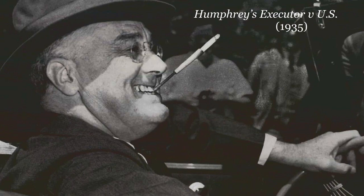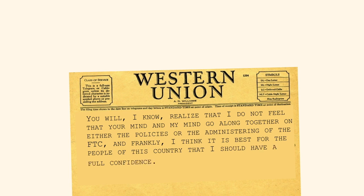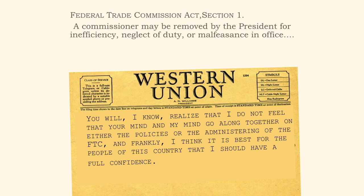Humphrey was one of the commissioners on the Federal Trade Commission, appointed by President Coolidge and reappointed by President Hoover. Once in office, President Franklin Roosevelt requested Humphrey's resignation — 'You will, I know, realize that I do not feel that your mind and my mind go along,' etc. Humphrey did not take the hint and FDR fired him. Humphrey sued on the ground that his dismissal was in violation of the FTC Act: a commissioner may be removed by the president for inefficiency, neglect of duty, or malfeasance in office. The court did not read the FTC Act as idly listing a few of the many reasons for which an FTC commissioner might be removed; the act was read as stating the sole grounds for which a commissioner could be removed by the president.